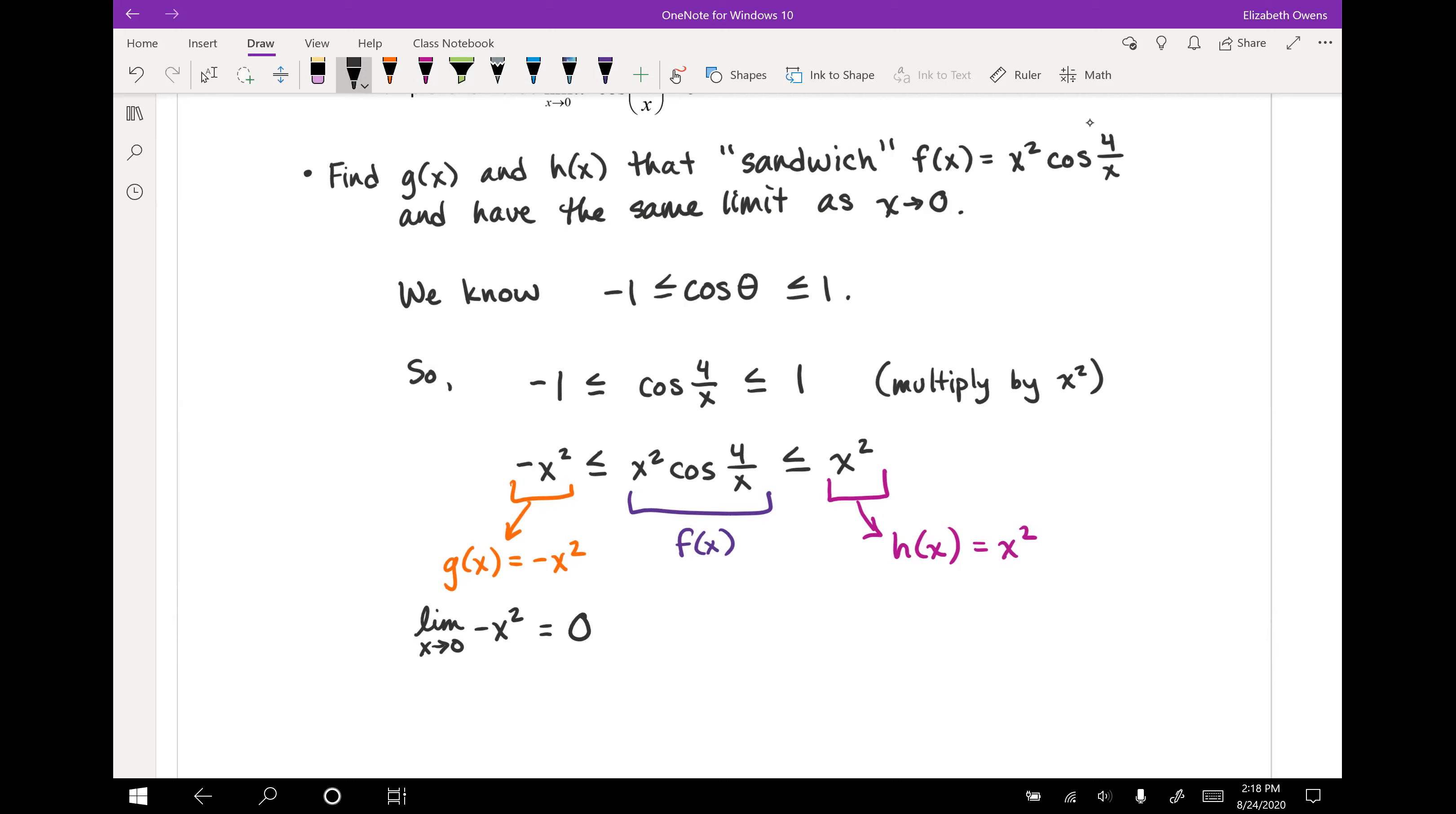Same thing with h of x. The limit as x approaches zero of h of x, which is positive x squared. We can directly substitute into that as well. We get zero squared, which is zero.